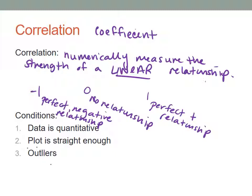What does it mean for it to be a perfect relationship? If you had a scatter plot where every single one of those points falls exactly on the line you would use to describe them, that is a perfect relationship. All of the points would lie on the explanatory line. The letter we use for correlation coefficient is lowercase r. In order to calculate it, the data has to be quantitative, the plot's got to be straight enough, and you want to be careful about outliers.